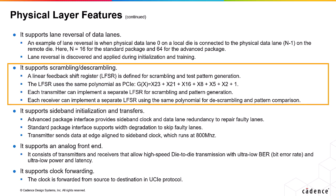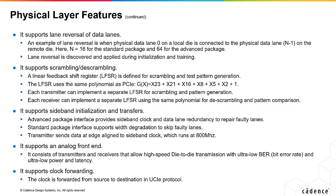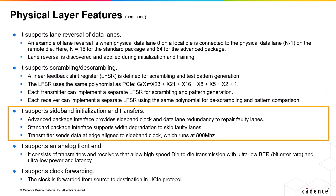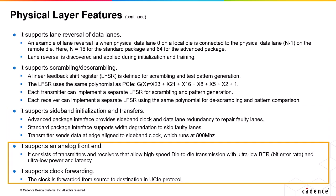Each transmitter can implement a separate LFSR for scrambling and pattern generation. Similarly, each receiver can implement a separate LFSR using the same polynomial for descrambling and pattern comparison. It also supports sideband initialization and transfers. The advanced package interface provides sideband clock and data lane redundancy to repair faulty lanes, while the standard package interface supports width degradation to skip faulty lanes. A transmitter sends data edge-aligned to a sideband clock running at 800 MHz. It supports an analog front-end comprising transmitters and receivers that allow high-speed die-to-die transmission with ultra-low BER (bit error rate), ultra-low power, and latency. The clock is forwarded from source to destination in the UCIe protocol.